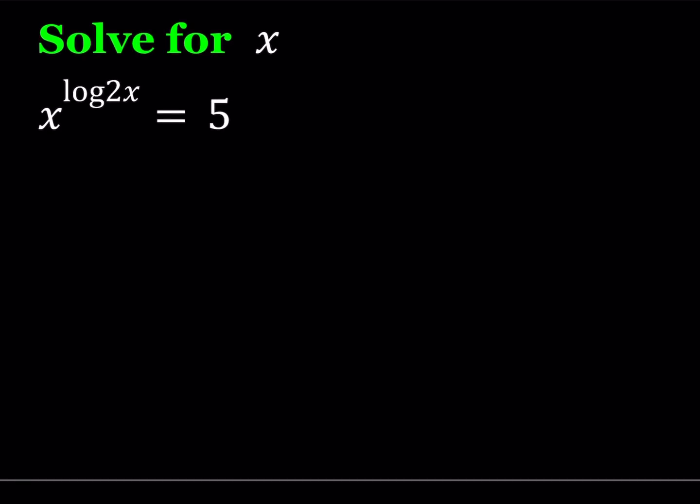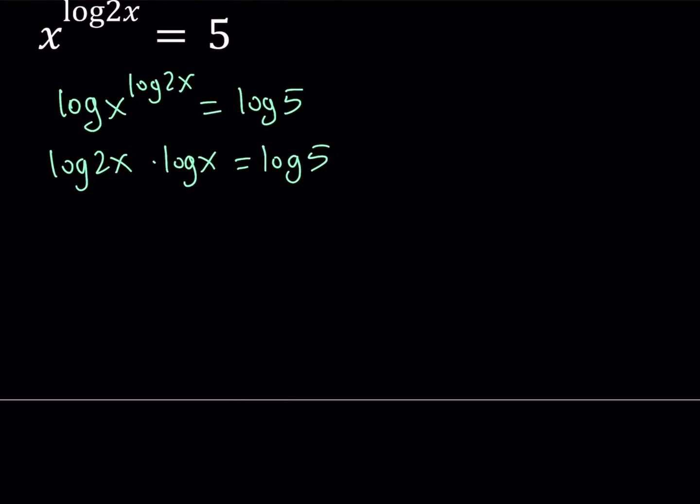So let's start by logging both sides. And then we're going to move the exponent. Now we can go ahead and write log 2x by using the properties. We can write it as a sum. And then by way of substitution, we can turn this into a quadratic equation.